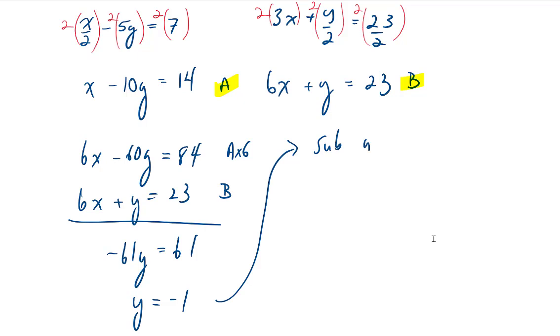Next, I'm going to sub y equals negative 1 into equation a or b. So I'm going to choose equation a. And I get x minus 10 times negative 1 equals 14. That gives me x plus 10 equals 14. And subtracting 10 from both sides tells me that x is equal to 4.